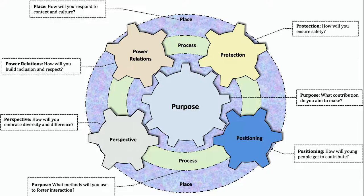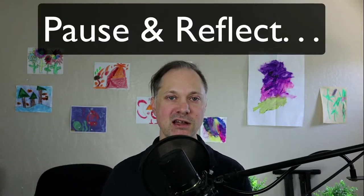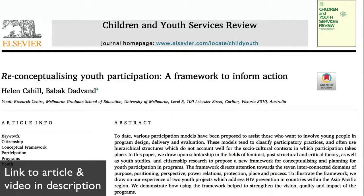To help us analyze our programs and develop a plan for supporting a more student-centered program, we're going to work with professors Helen Cahill and Babak Dodvin's article and their P7 framework, or 7P framework. If we're really embracing the ethic of student-centeredness, it makes the most sense for you to develop an approach that is specific to the students in your program. I recommend you watch this entire video so you have a sense of the key frameworks and ideas, then go back and pause after each framework or concept to reflect on your program. I also encourage you to read Cahill and Dodvin's article and watch their own video explaining their framework.